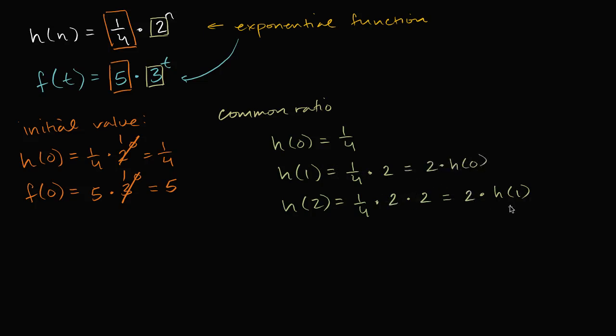If we were to take the ratio between h of one and h of zero, it would be two. That is the common ratio between successive whole number inputs into our function.